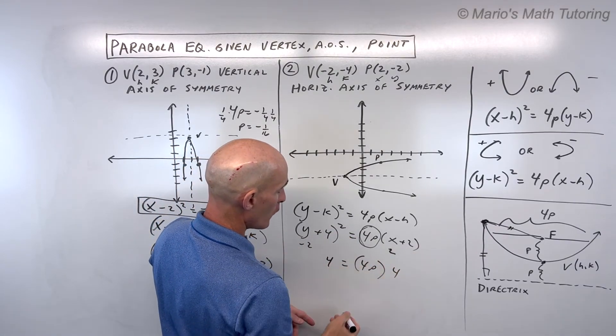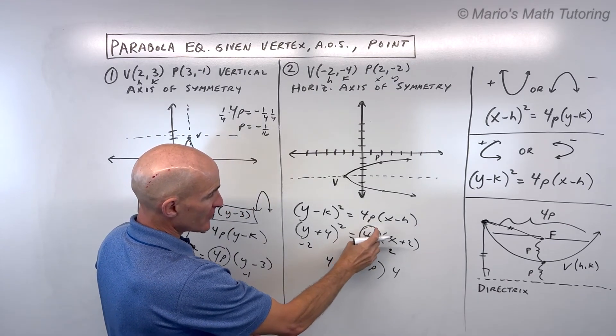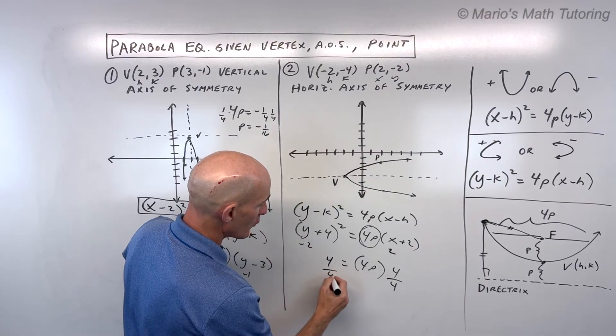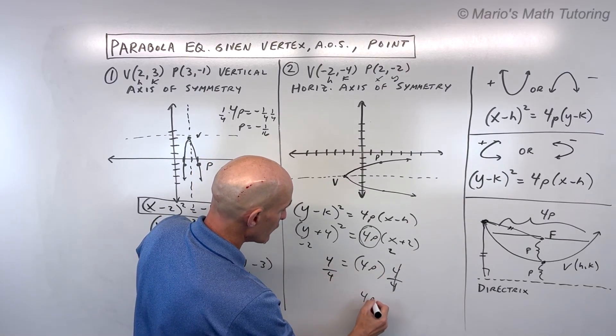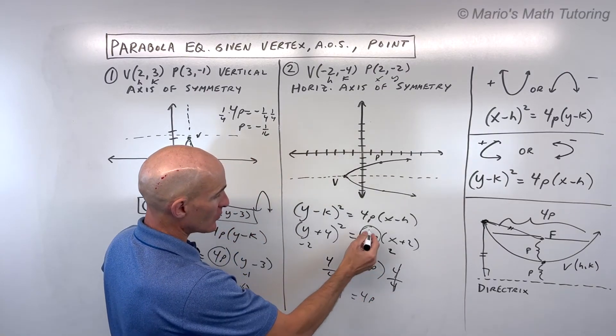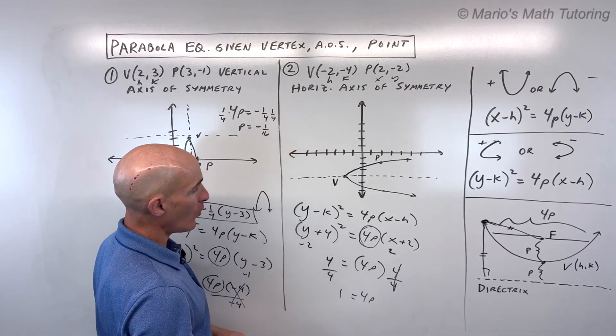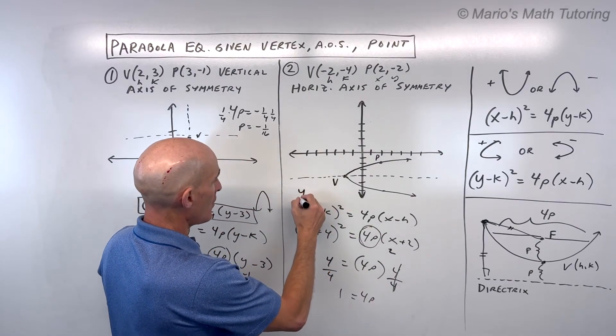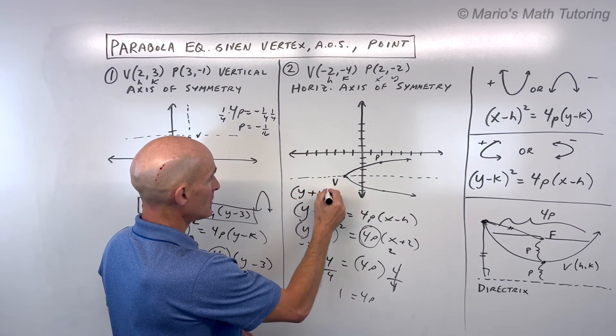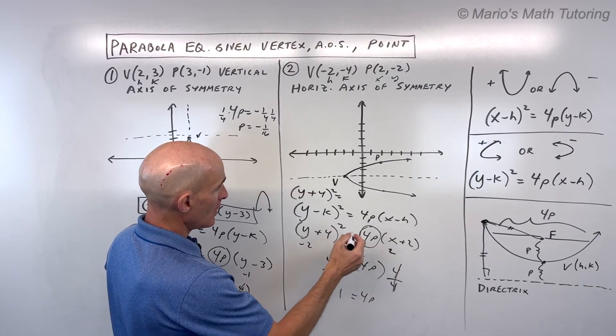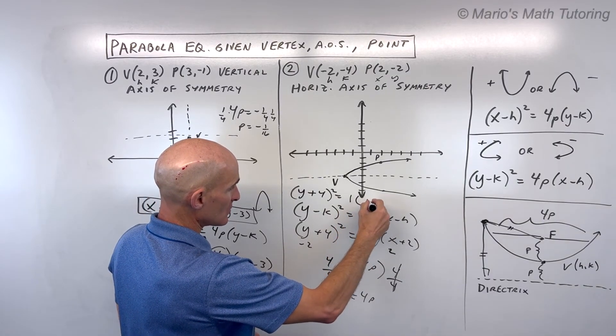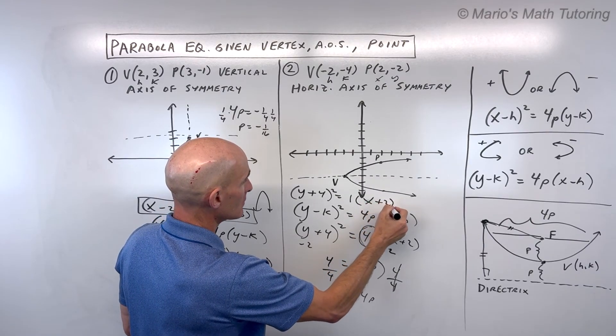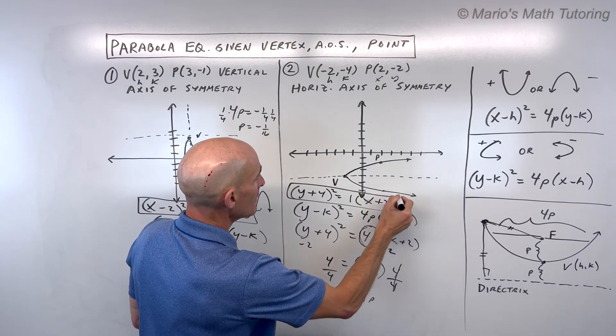this is 4P, 2 plus 2 is 4. So my goal is to figure out what this coefficient is here, 4P. I'm just going to divide both sides by 4, so that means that 4P is equal to 1. So I can replace this quantity here with 1, and so that would be our equation. So let's see if we can write it down right here. So (y+4)² = 1(x+2).